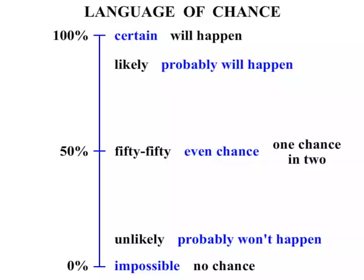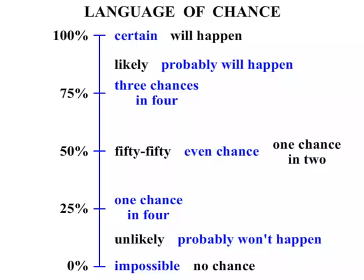A couple of other things to look at. At the 25% mark, we might say that it is one chance in four. At the 75% mark, we might say it's three chances in four. We'll look at some examples soon to see that.